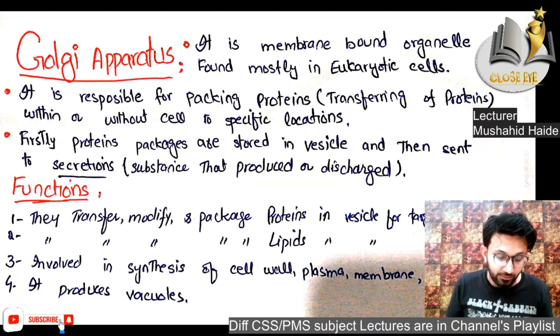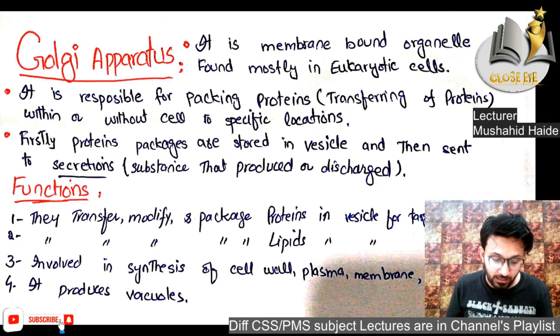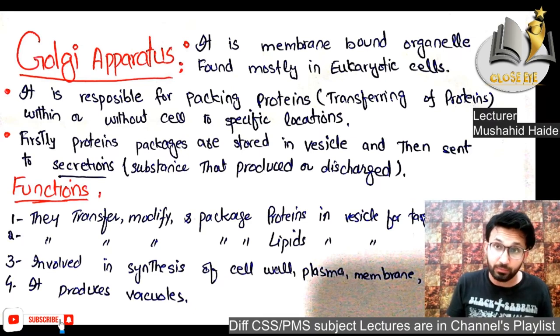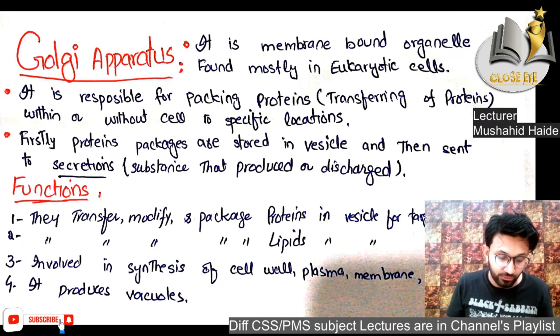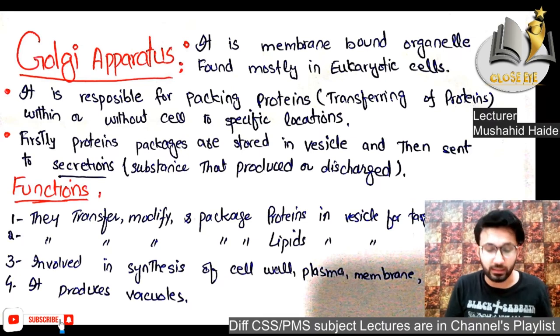The Golgi apparatus is also involved in the synthesis of cell walls, plasma membranes, and lysosomes. It produces vacuoles as well.